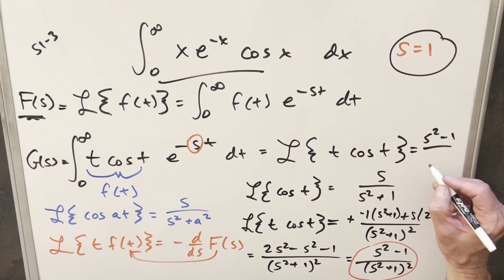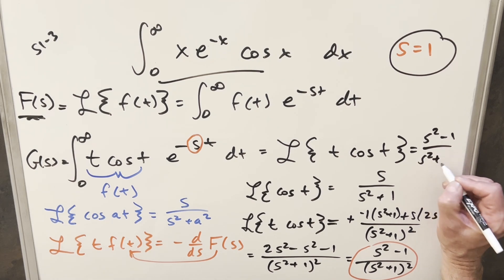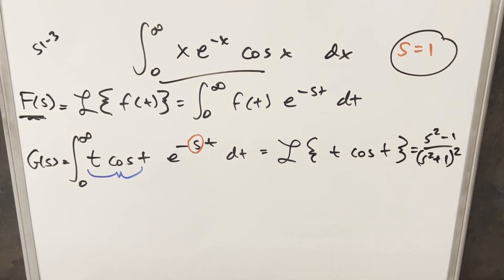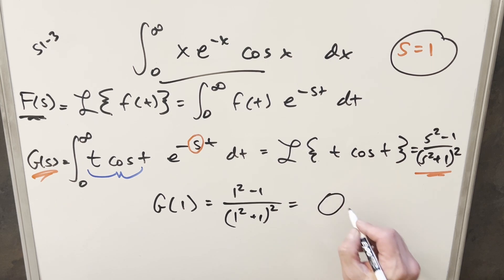So all we need to do in order to finish this off is take our function here, big G of s, and we just need to evaluate it at s equals 1. So all we need to do is just plug in. So we need to find a value for G of 1. So coming back with this, it's going to be 1 squared minus 1 over 1 squared plus 1 all squared. But this numerator is just going to be 0. So for my final solution of this, we just get 0.